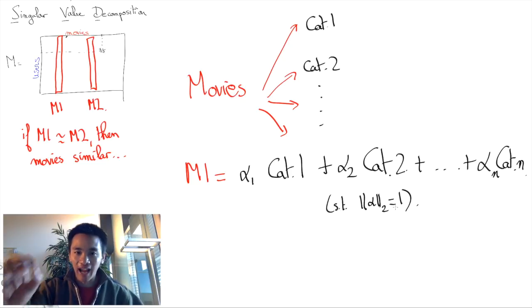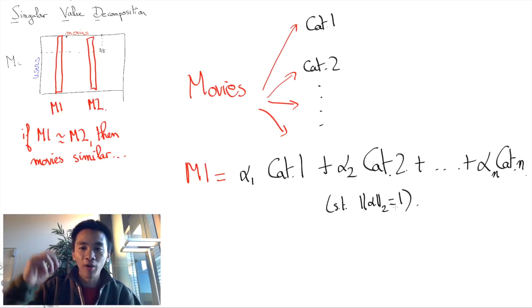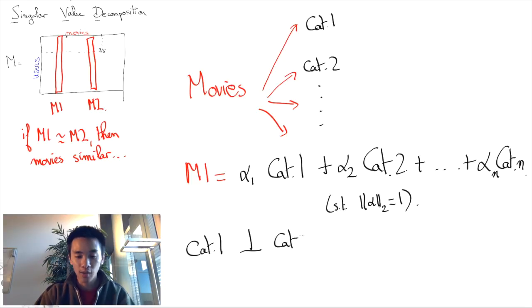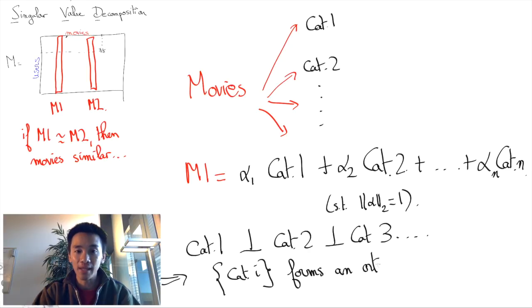the key categories that we want to take out from our data, will have to be orthonormal. And so the set of categories will have to form an orthonormal basis.